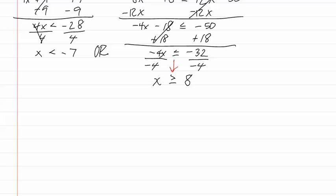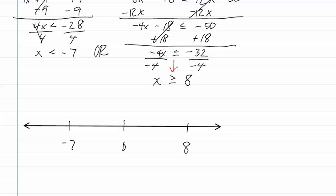We now need to graph our inequality. Let's write the overall number line with our numbers on it. Next, we float the graph of each one above the line. We put an open circle for less than at negative seven and go to the left toward negative infinity. Then we do the second graph: a filled-in dot for greater than or equal to at eight, going to the right toward positive infinity.